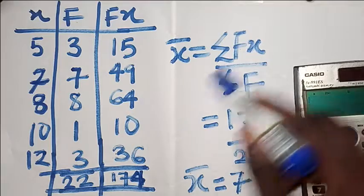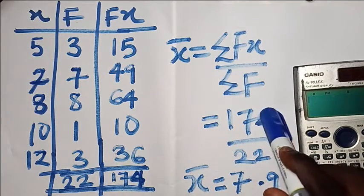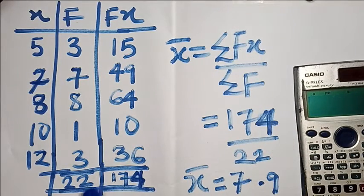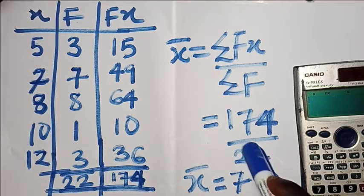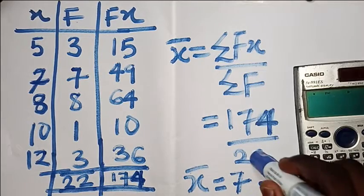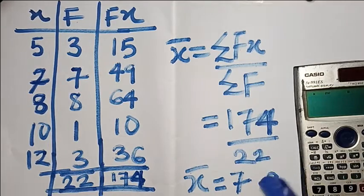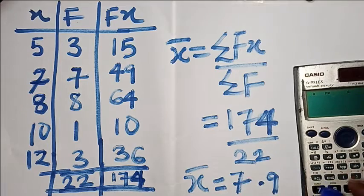To find the mean, the formula is summation FX over summation F. So summation FX is 174 and summation F is 22. Dividing 174 by 22 gives us 7.9. Now let's see how to get this using the calculator.